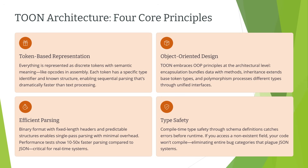The first principle is token-based representation. Everything is represented as tokens — a token is a discrete unit of data with semantic meaning. Unlike JSON where you have text that needs parsing, TOON uses predefined token types. Each token has a specific type identifier and known structure. When you parse TOON data you are reading these tokens sequentially, which is much faster than parsing text. For example, instead of the string 'name: John', you have a name token with type ID 0x03 followed by a string token containing 'John'. The parser knows exactly what to expect for each token type.